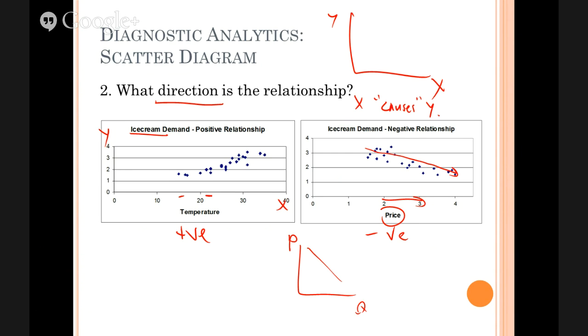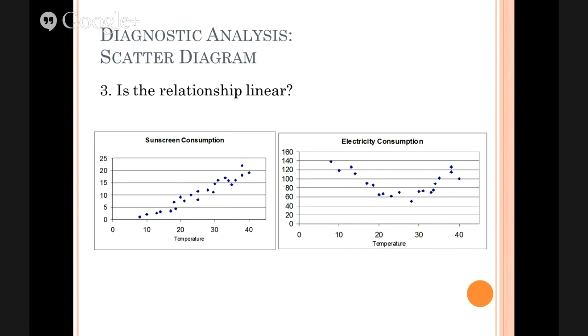Second question, what direction is the relationship? And the third question, is the relationship linear? This is important because later on when we start to do predictive analytics, we're going to have to start building models and the model that we build is going to be a linear model. In addition, even in the present, we're talking about a measure called correlation. The correlation is a measure of linear connection between variables.